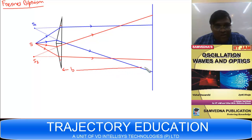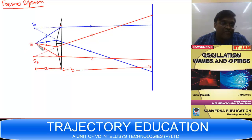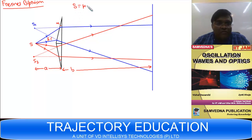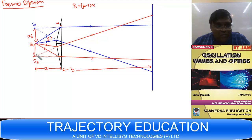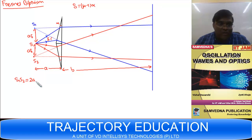Let the distance between the source and the prism be A, and between the prism and the screen be B. The angle of deviation δ is approximately equal to (μ − 1)α, where α is the refracting angle. If the distance from source to prism is A, then the lateral shift on each side is A·δ.